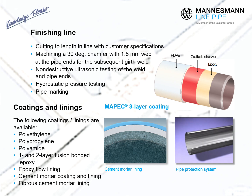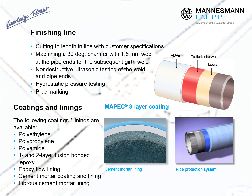Longitudinally welded steel pipe for cost-effective pipeline construction under punishing conditions. Three-layer plastic coating consists of an epoxy resin primer on the steel surface, an adhesive layer for reliable adhesion between the primer and the polyethylene top layer, providing top quality, highly effective corrosion protection and guaranteeing a long service life. Cement mortar lining offers internal corrosion protection and superior hygienic properties, while a fiber cement mortar coat provides added external protection against mechanical damage to the plastic coating.